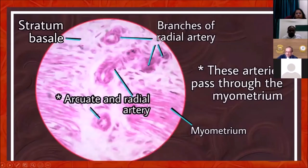Here comes muscle tissue, smooth muscle, and you can see actually a radial artery penetrating into the endometrium.